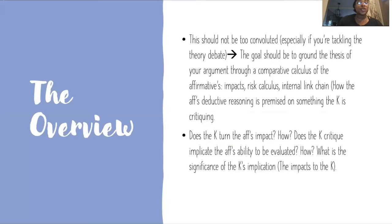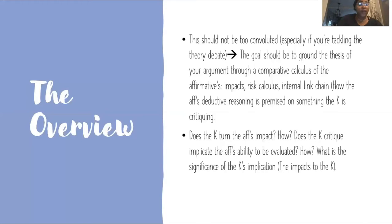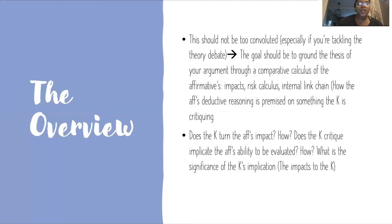Some questions you should consider while putting together your overview: Does the K turn the aff's impact? How? Does the critique implicate the aff's ability to be evaluated? How? What is the significance of the K's implication — i.e., what are the impacts to the K? And how are those getting compared to the affirmative's impacts? These are the central questions that your overview must tackle in order for the judge to understand how to consolidate these larger theoretical claims into functional components in the round.